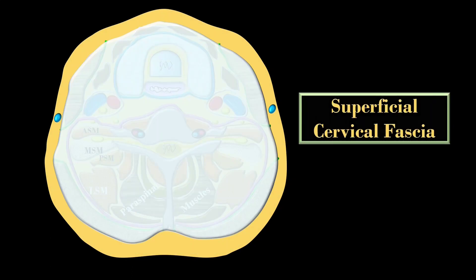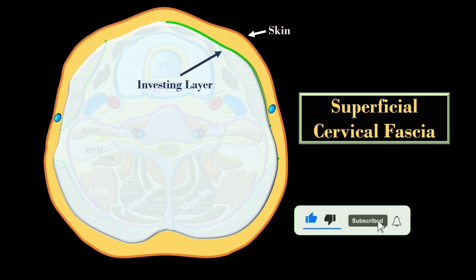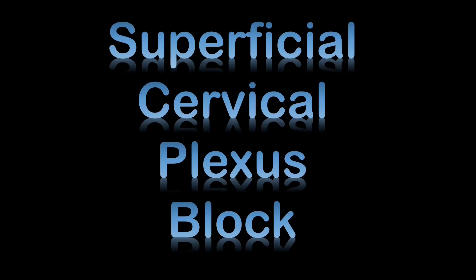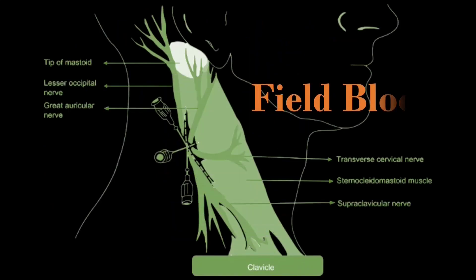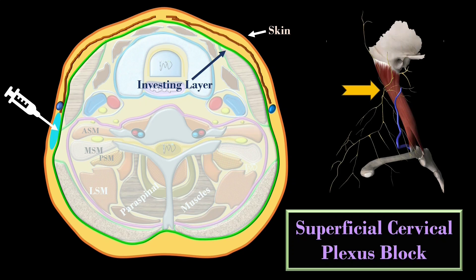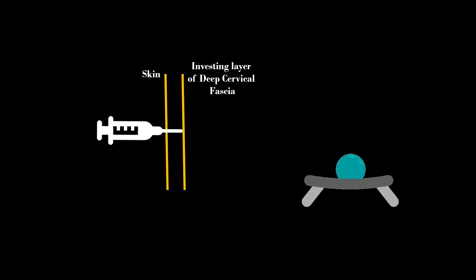The superficial fascia lies between the dermis and the investing layer of deep cervical fascia, and contains the platysma muscle. The superficial cervical plexus block is considered a field block, consisting of a subcutaneous injection of local anesthetic just under the skin where the terminal branches of the cervical plexus emerge as four distinct nerves behind the posterior border of the sternocleidomastoid muscle. When performing this block, a bounce of the fascia is important to confirm the investing layer of deep cervical fascia has not been pierced.